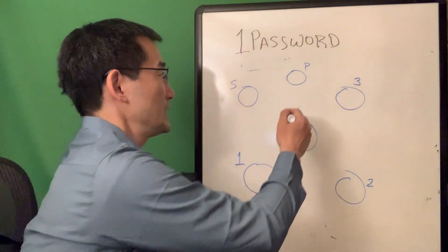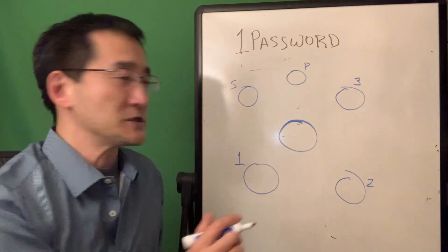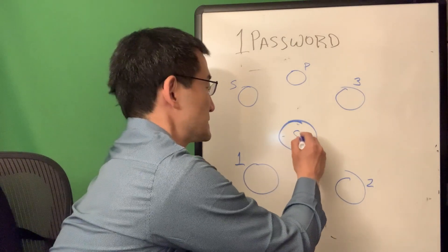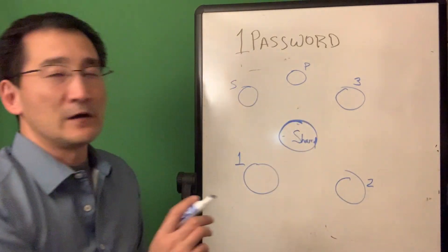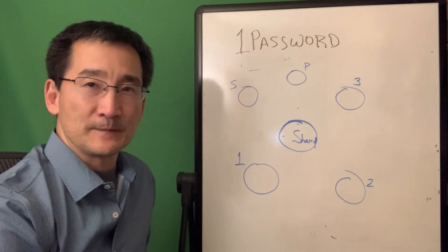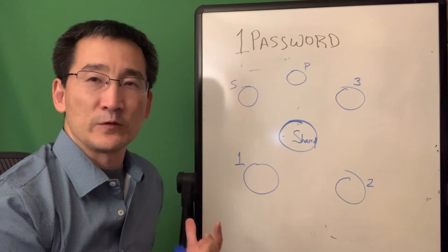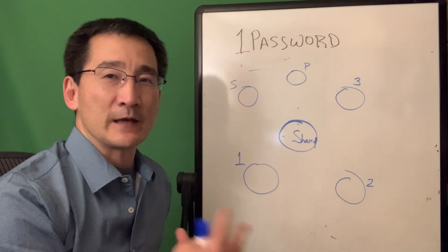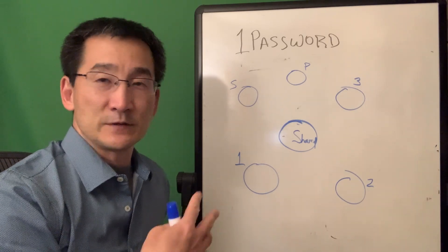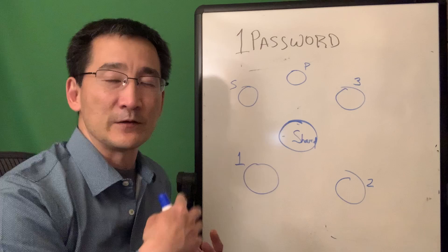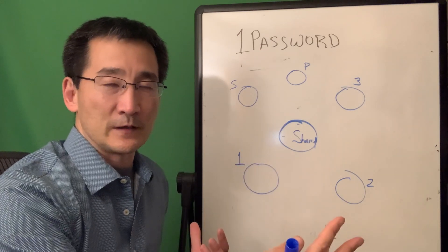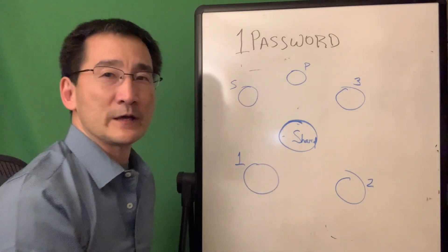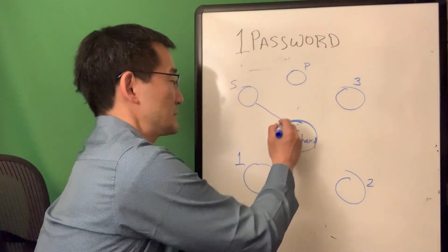When you set it up, you as the primary person will have a vault and you'll have what's called the shared vault. When you set folks up in this account, you have to go through a process where you send an invitation and they have to accept it, and then you have to confirm it. It's a double sort of confirmation — the person has to confirm they are the person, and you have to confirm again on your side that they're the right person.